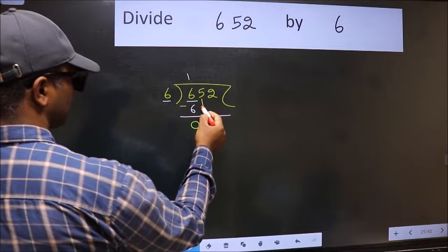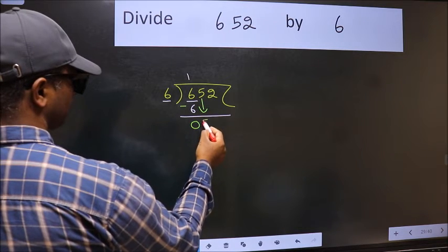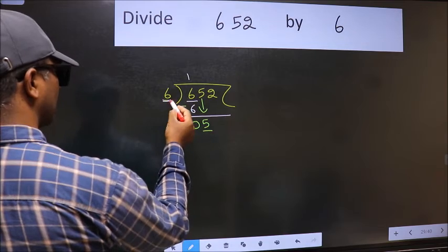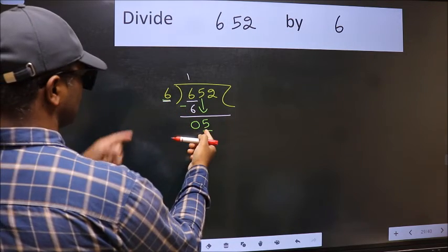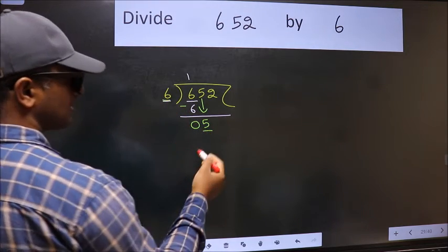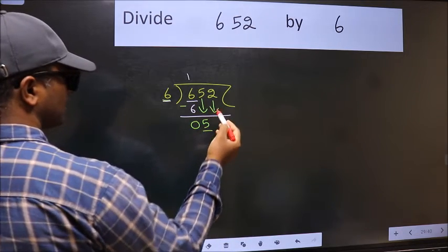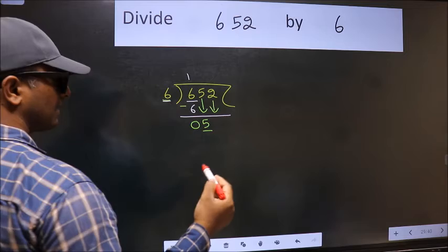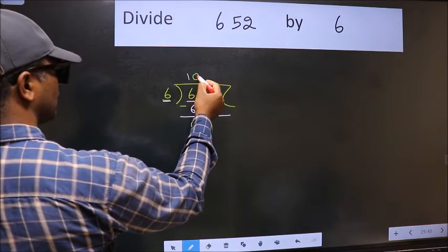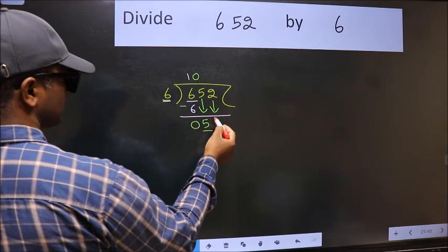After this, bring down the beside number. So 5 down. Now here we have 5 and 6 here. 5 is smaller than 6, so we should bring down the second number. And the rule to bring down the second number is we should put 0 here. Then only we can bring this number down.